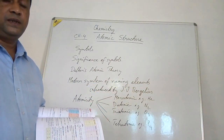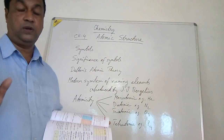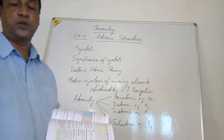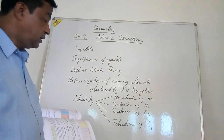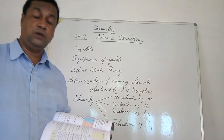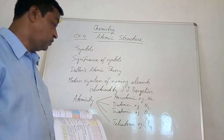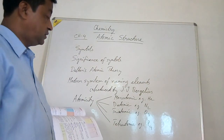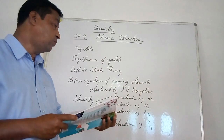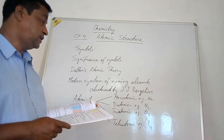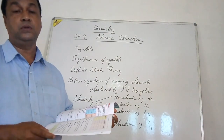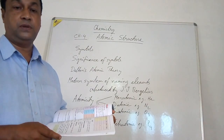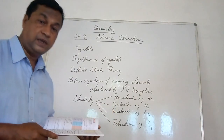Tetra means there are four atoms in one molecule. Phosphorus has four atoms in one molecule and is called tetraatomic. To summarize: mono means one atom (monoatomic), di means two (diatomic), tri means three (triatomic), and tetra means four (tetraatomic).